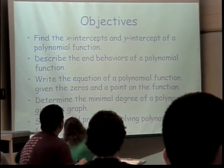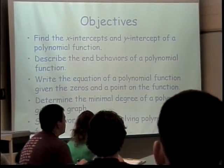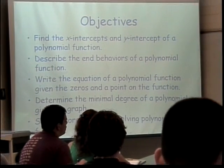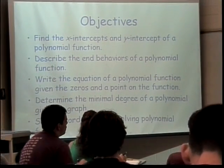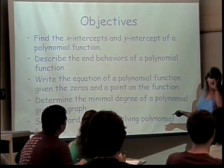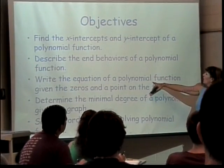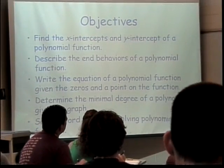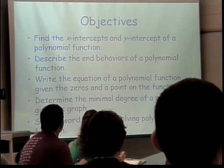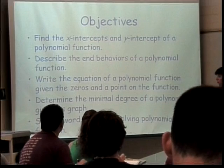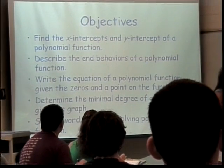Now, what are we going to be able to do with our polynomial functions? Well, we're going to do some of the same things we've done before. We're going to find x and y intercepts. We're going to define something new called end behaviors, and we're going to be able to describe those. We're going to write the equation of a polynomial function given the zeros and a point on the function. We're going to look at the graph of a polynomial function and determine its minimal degree. And then we're going to solve word problems involving polynomial functions.